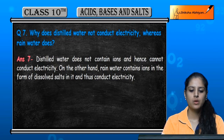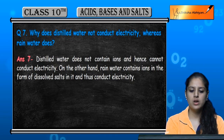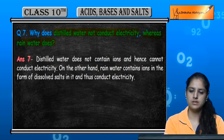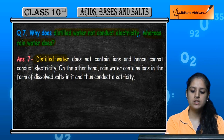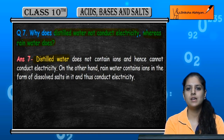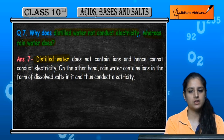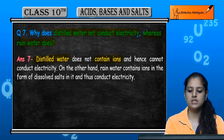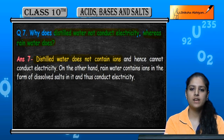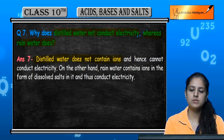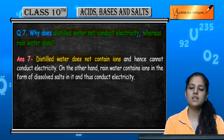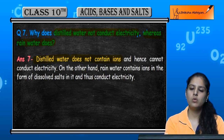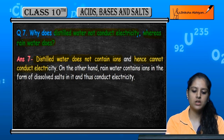Question No. 7: Why does distilled water not conduct electricity whereas rain water does? Distilled water does not contain ions. When we talk about conducting electricity, ions are very important. So if there are no ions, it will not conduct electricity. Because distilled water does not contain ions, it does not conduct electricity.